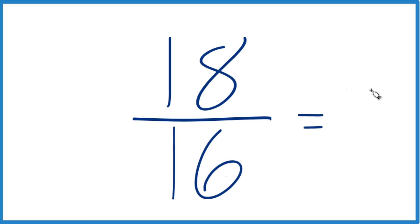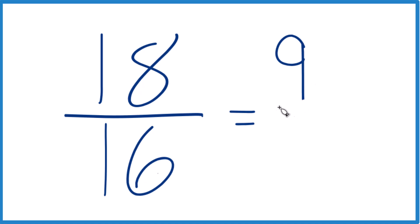So 18 divided by 2, that's 9. 16 divided by 2, that's 8. So 18 sixteenths can be simplified down to 9 eighths, and we can't reduce or simplify this any further.